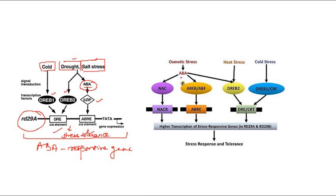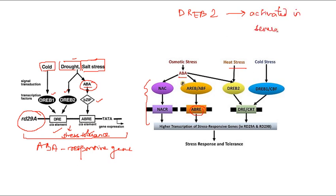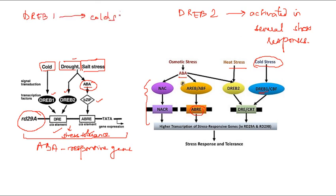The ABA-responsive gene activates a transcription factor which activates the ABA-responsive element. In heat stress, salinity stress, and dehydration stress, DREB2 is activated. In cold stress specifically, DREB1 is activated. Together they help in the activation of stress-responsive genes and contribute to stress tolerance.